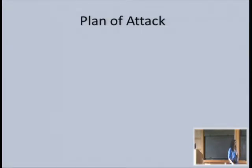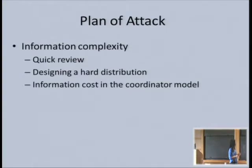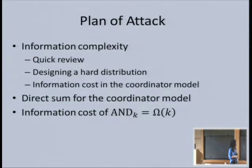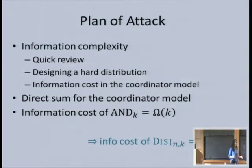So what are we going to do? I want to prove a lower bound of Ω(NK) on the communication complexity of set disjointness. I'll use information complexity tools. I'll show how to design a hard distribution, introduce the notion of information cost, prove a direct sum theorem showing that solving n-bit set disjointness is n times harder than solving one-bit AND with k players, and then prove that the information cost of that one-bit AND is Ω(k). That gives a lower bound of NK on information cost, which translates to Ω(NK) on communication.